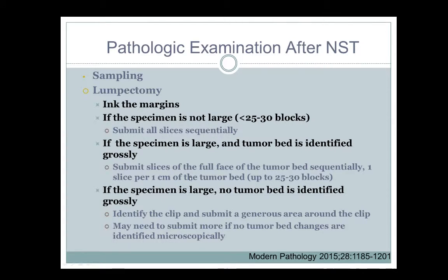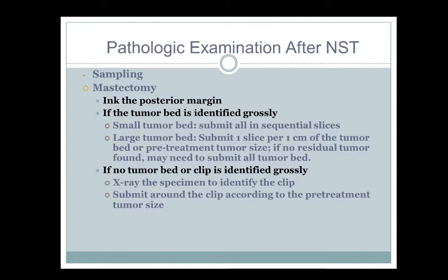In breast pathology, people tend to over-submit, especially if you don't see residual tumor and want to be sure before calling it a complete response. When you have a large tumor and grossly don't see a tumor bed, submit a generous area around the previous biopsy clip. For mastectomy, we do nice thin slices, identify the lesion, then ink around the lesion only — it's less messy. If you identify the tumor bed, you submit it sequentially by slice: medial, middle, lateral. If you can't identify a tumor bed, x-ray the mastectomy and submit around the clip.